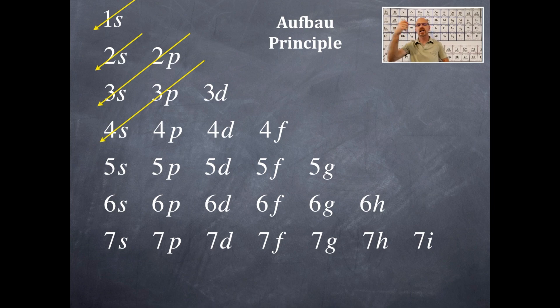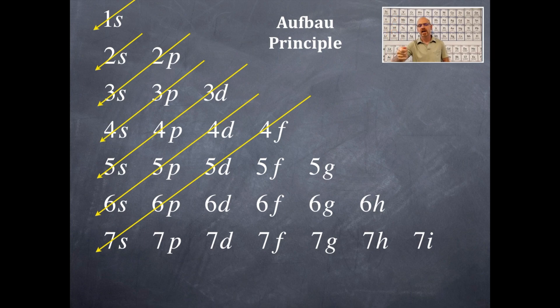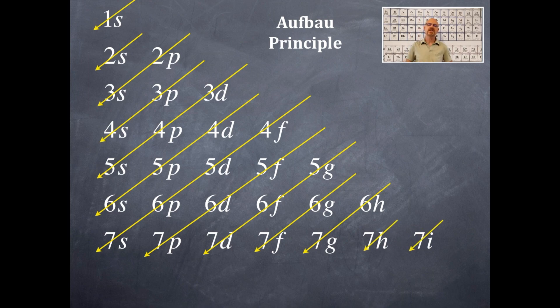After 4s comes 3d, 4p, 5s. After 5s comes 4d, 5p, 6s. After 6s comes 4f, 5d, 6p, 7s. And hopefully you get the pattern here. So this is the entire pattern. If you look online, you can probably see this in the shape of a Christmas tree or something like that, and then you can follow the pattern as well.